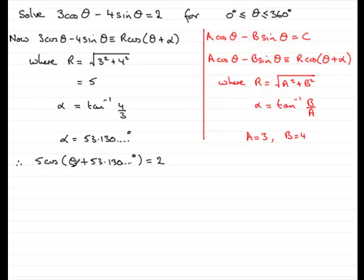So what do I need to do now? Well, I need to get to this angle in here. And that would mean dividing both sides by 5 to give me that the cosine of this angle equals two fifths. And then take the inverse cos to both sides. So I'm going to then have that this angle, theta plus 53.130 and so on degrees, is equal to the inverse cos of two fifths. So if I use a calculator at this point and work out what the inverse cos of two fifths is, what I should find that I get is 66.421 and so on degrees.